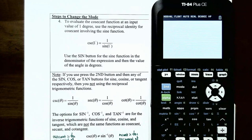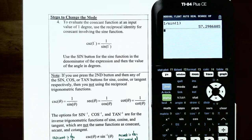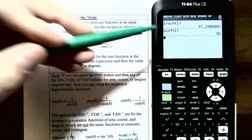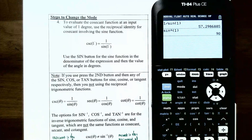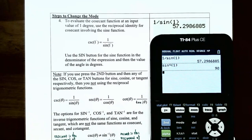To evaluate cosecant, use the reciprocal identity: 1 divided by sine. For example, cosecant of 1° = 1/sin(1°) ≈ 57.299. This is not the same as inverse sine of 1°, which equals 90. Similarly, secant of theta is 1/cos(theta) — not inverse cosine — and cotangent of theta is 1/tan(theta) — not inverse tangent.